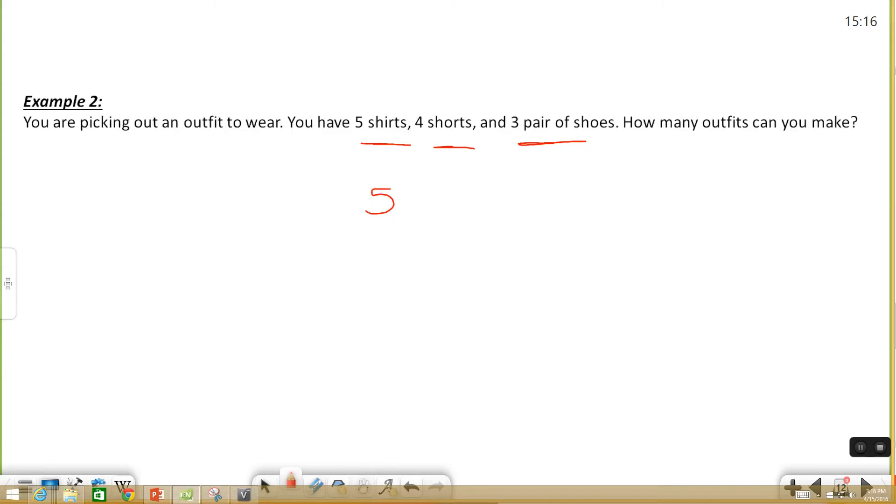So five times four times three. Five times four is twenty. Twenty times three is sixty. So with only that short amount of clothing options you can create sixty different outfits to wear.